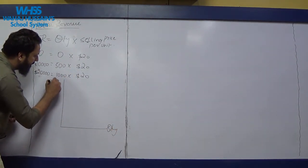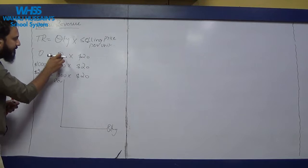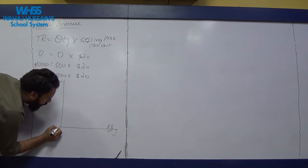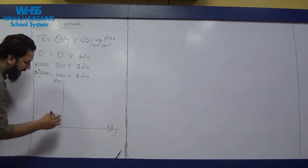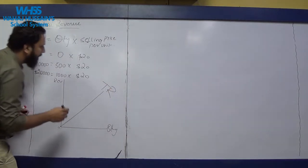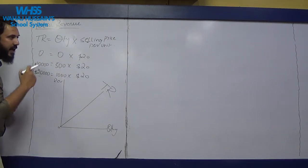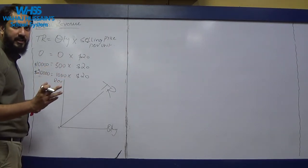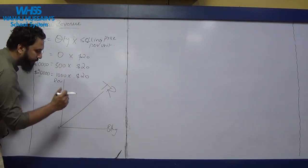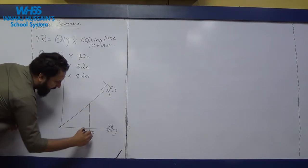When the firm produces nothing, they are not going to sell anything, so total revenue would be zero. The starting point of the total revenue curve is the origin. It then moves upward because as quantity increases, total revenue increases. Since both have a directly proportionate relationship with each other, the curve is an upward-movement, positively sloped curve.